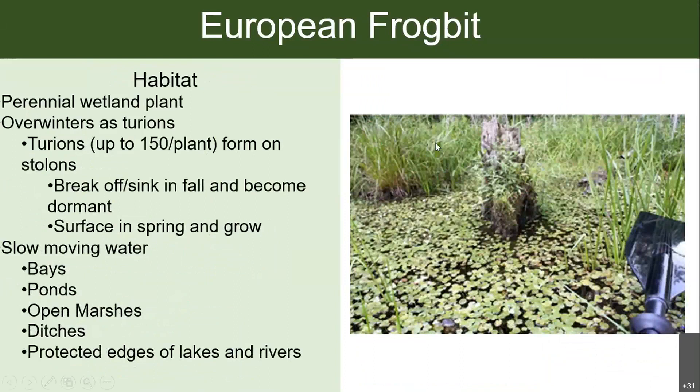European frogbit is a perennial wetland plant, meaning it comes back every year. Even though seed production is pretty unlikely, frogbit is able to persist due to its prolific production of turions. Turions are overwintering buds that form on the ends of the stolons, and each plant can produce up to 150 of these turions per season. Those buds break off and sink in the fall, staying dormant in the sediment throughout the winter, then rise to the surface and start growing again once the water warms up in the spring.